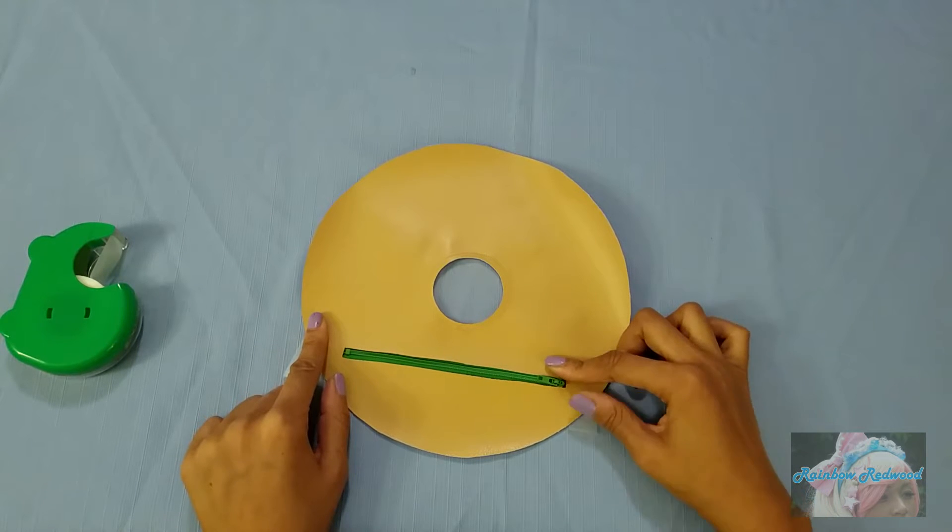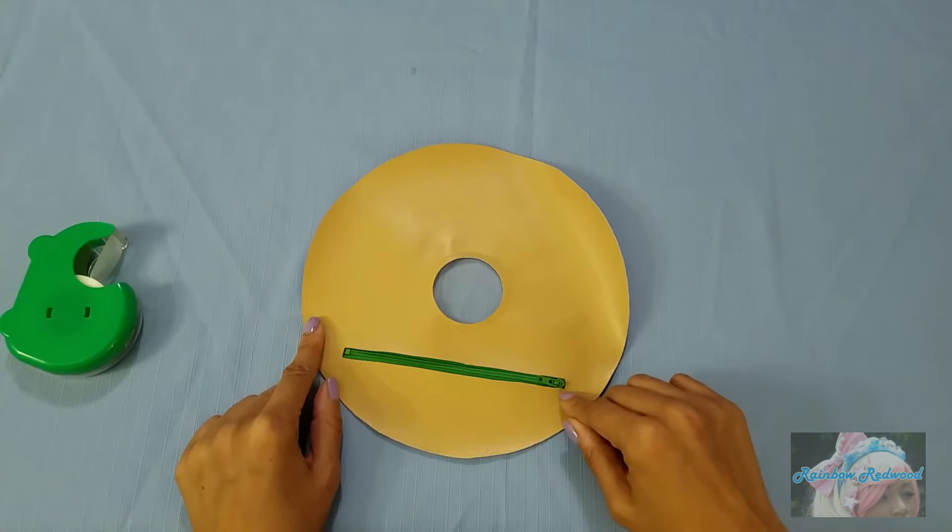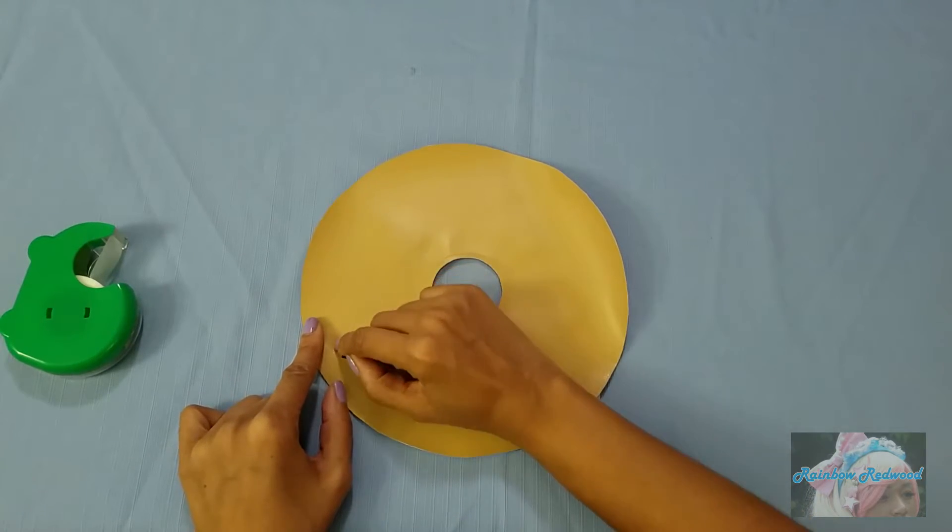First, you'll sew the not taped down edge. Remove your tape and then sew around this short edge, around the long edge and around this short edge.